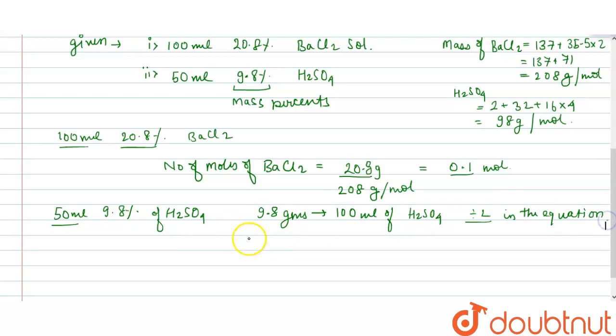If we see, number of moles would be given mass divided by molecular mass. Given mass is 9.8 grams in 100 ml. Therefore, in 50 ml, it would be half of this, which is 4.9 grams in 50 ml.